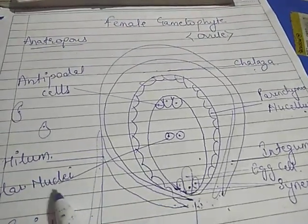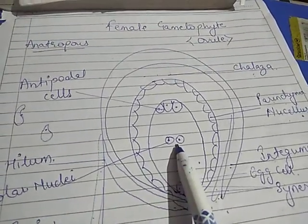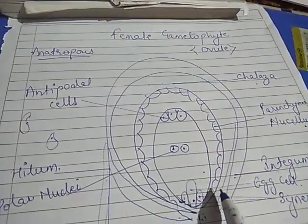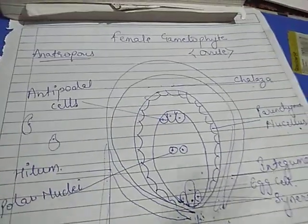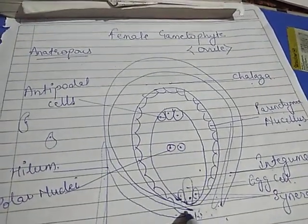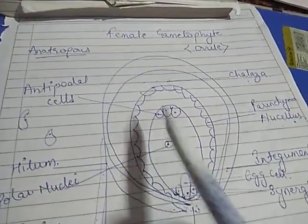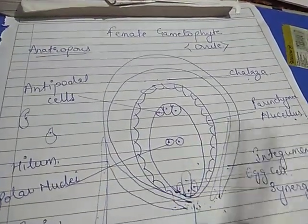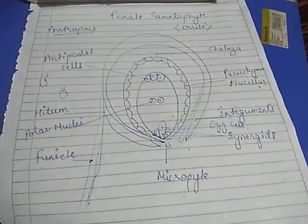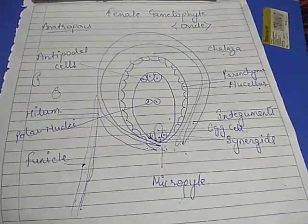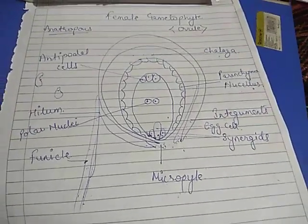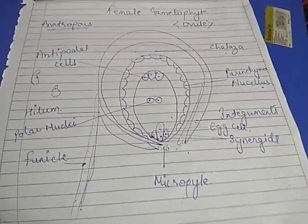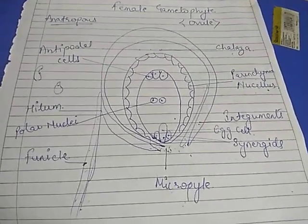Why the two nuclei are called polar nuclei will be discussed in the next diagram. Overall, this is an eight-nucleated structure: one egg cell, two synergids, two polar nuclei, and three antipodal cells — totaling eight nuclei. This is the overall diagram of the female gametophyte. Our next topic is how this female gametophyte develops.